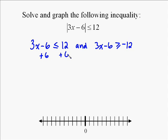You have to do both of these. When you solve the two inequalities separately, they're solved very similarly. In this case, we added 6 to get rid of the negative 6. It gave us 3x less than or equal to 18. Then we have to divide both sides by 3 to get x less than or equal to 6.